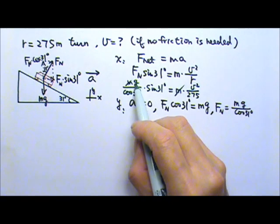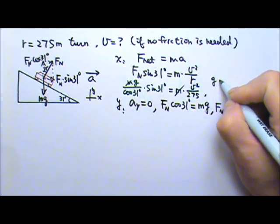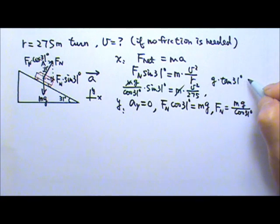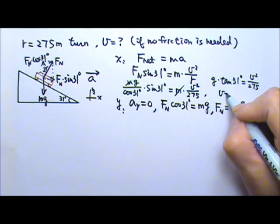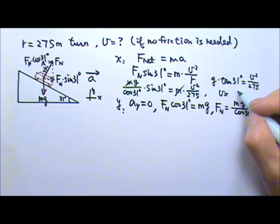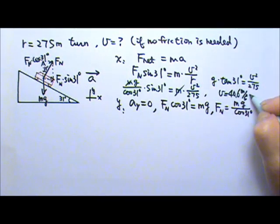Okay, so this part would be like G times tan 31 degrees. Of course you can plug in the G equals to 10. And that equals to V squared over 275. After you plug in G equals to 10, you'll find the speed to be about 40.6 meters per second. Okay, and that's about 91 miles per hour.